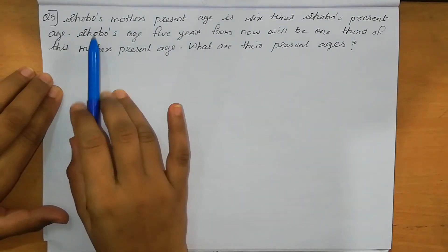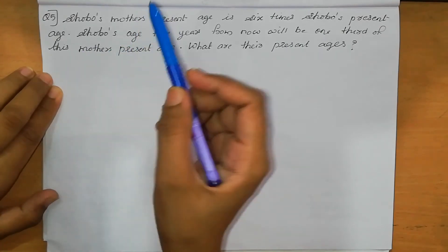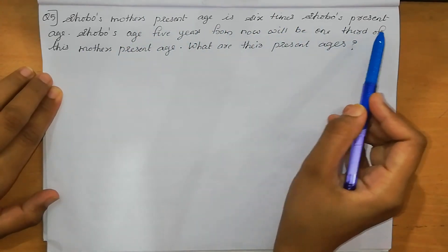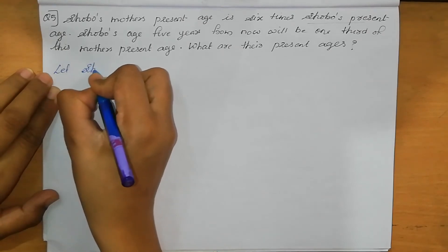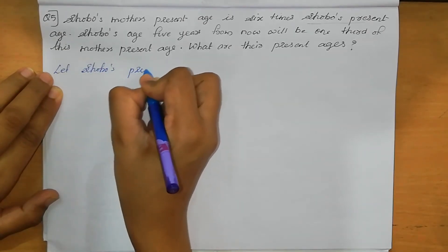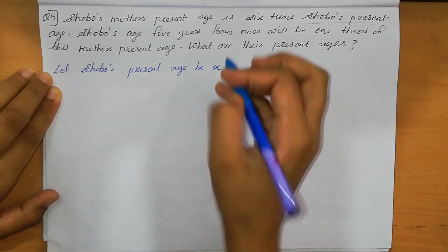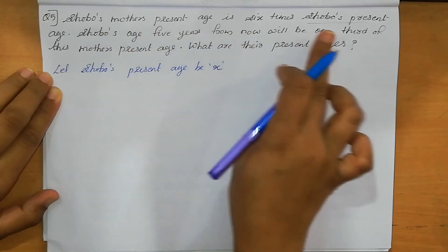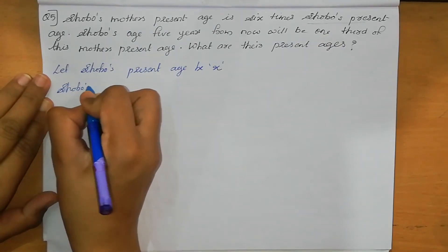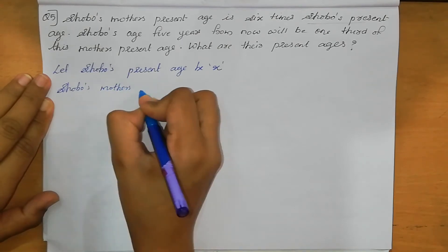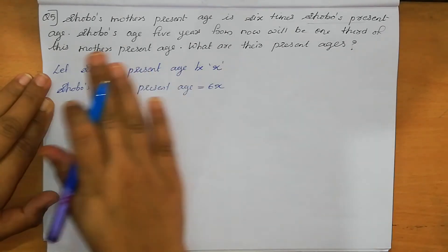Question number 5. Shobo's mother's present age is 6 times Shobo's present age. So we can take Shobo's present age be X. Let Shobo's present age be X. If Shobo's present age is X, then Shobo's mother's present age equals 6X.